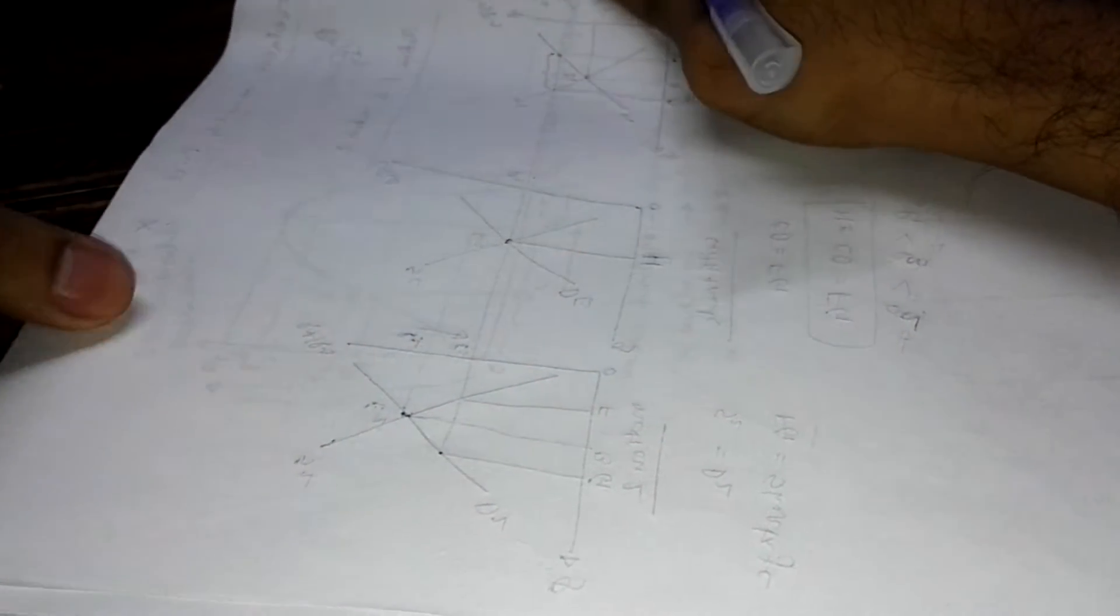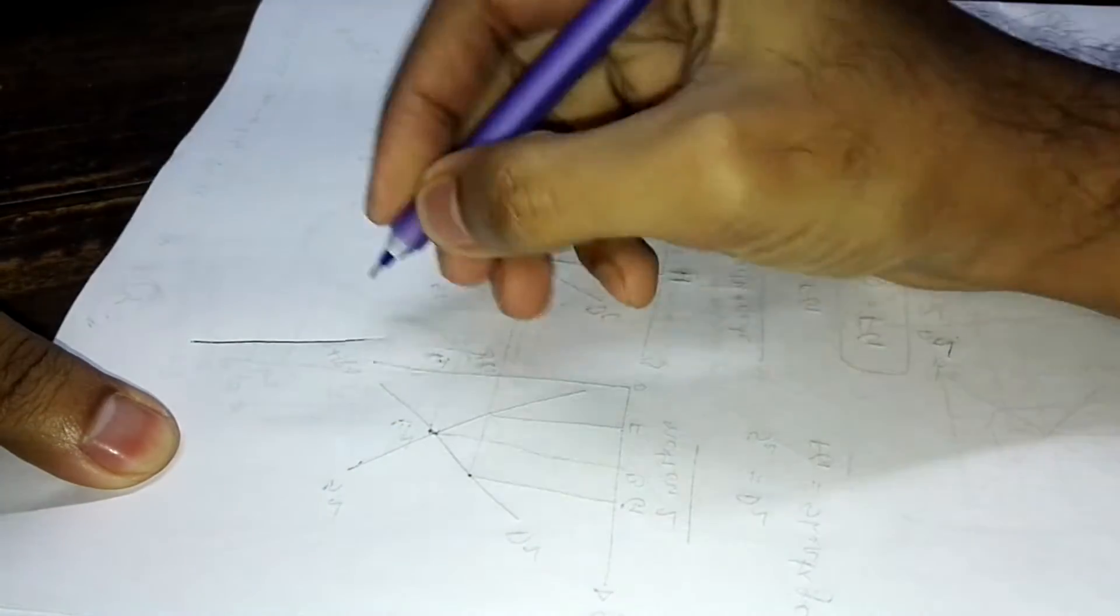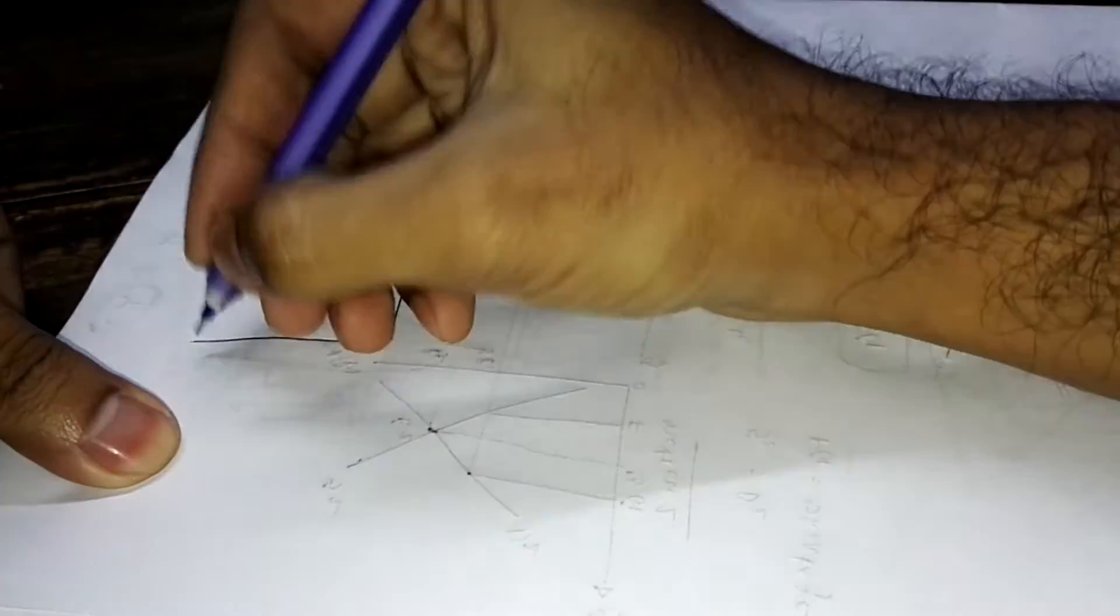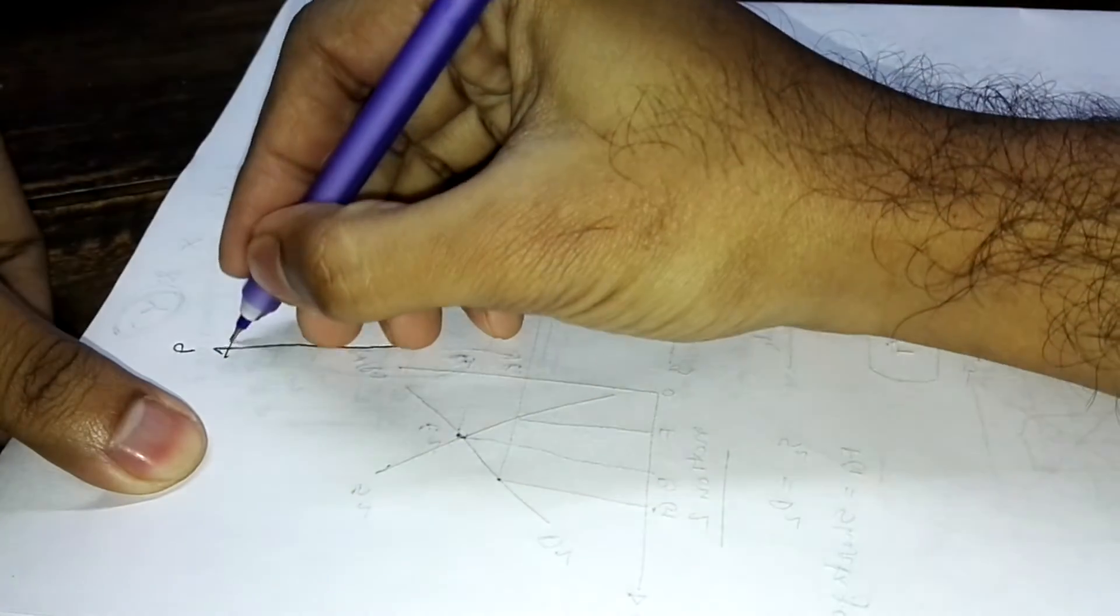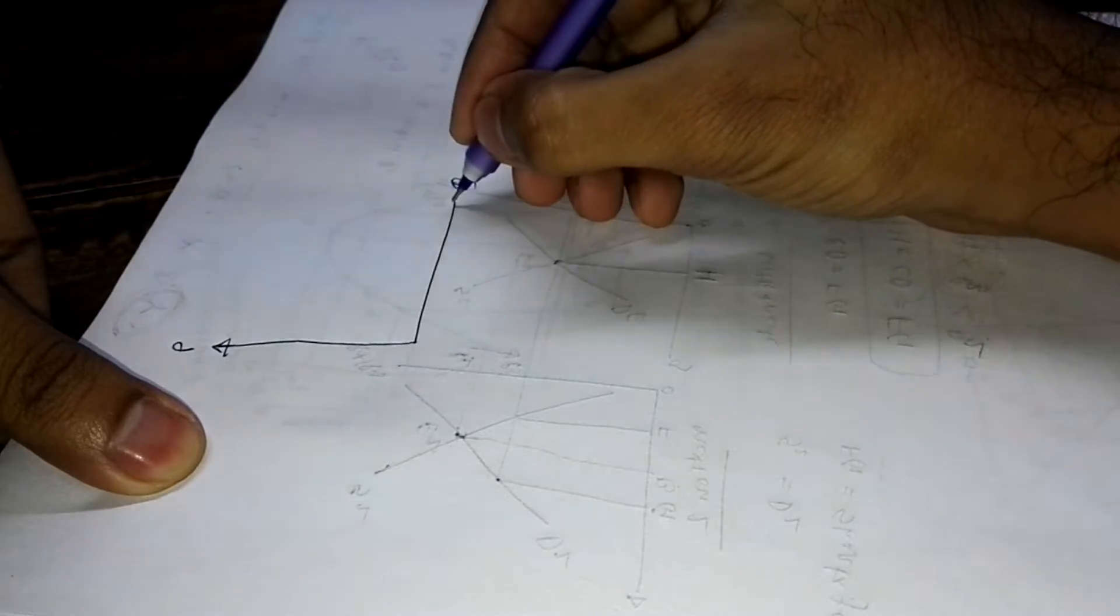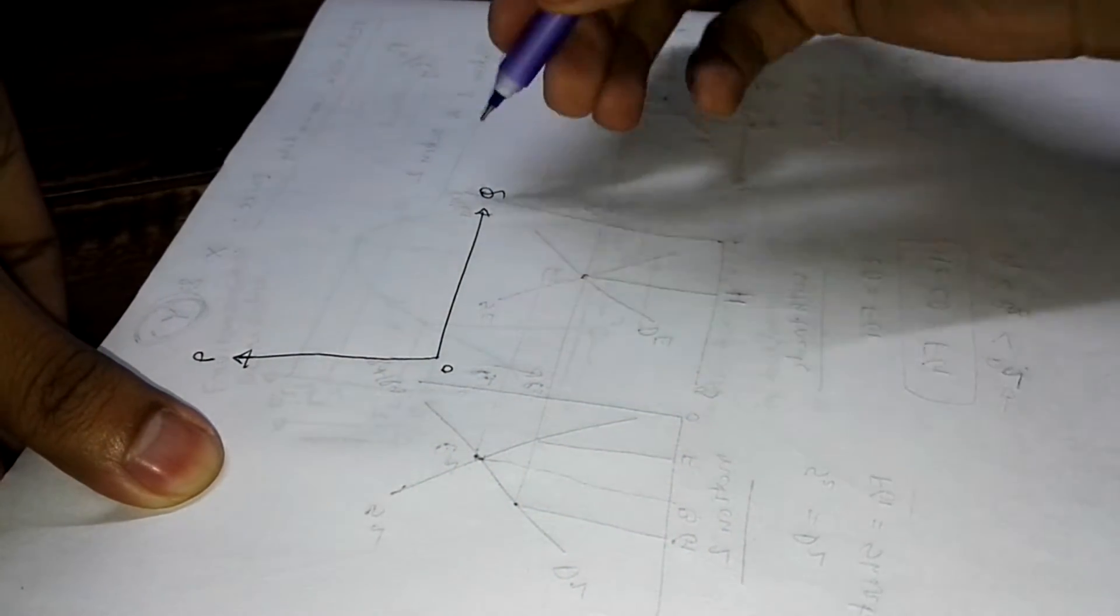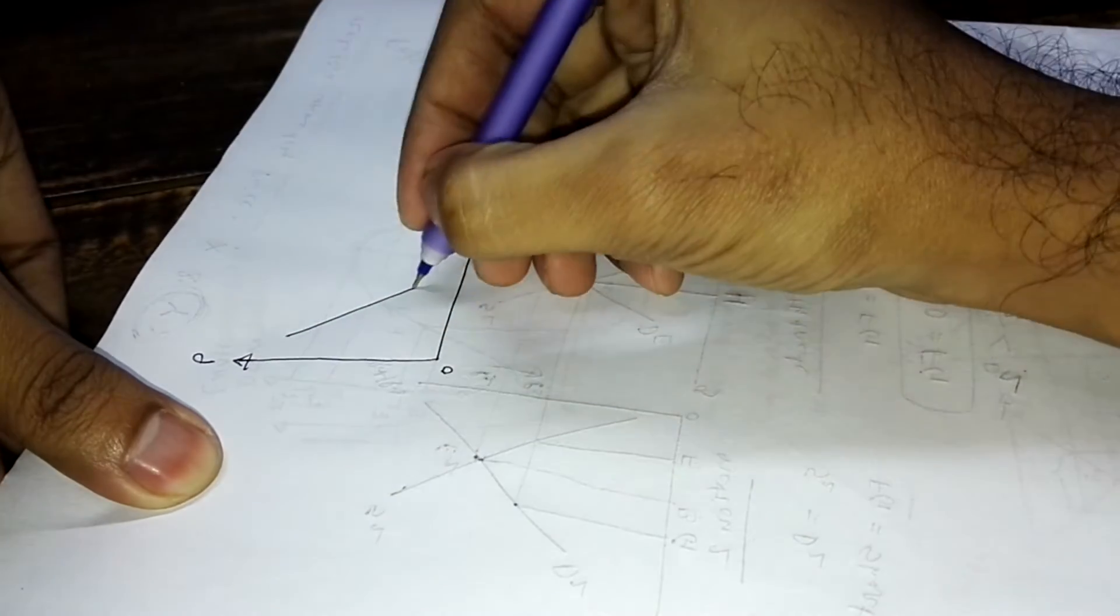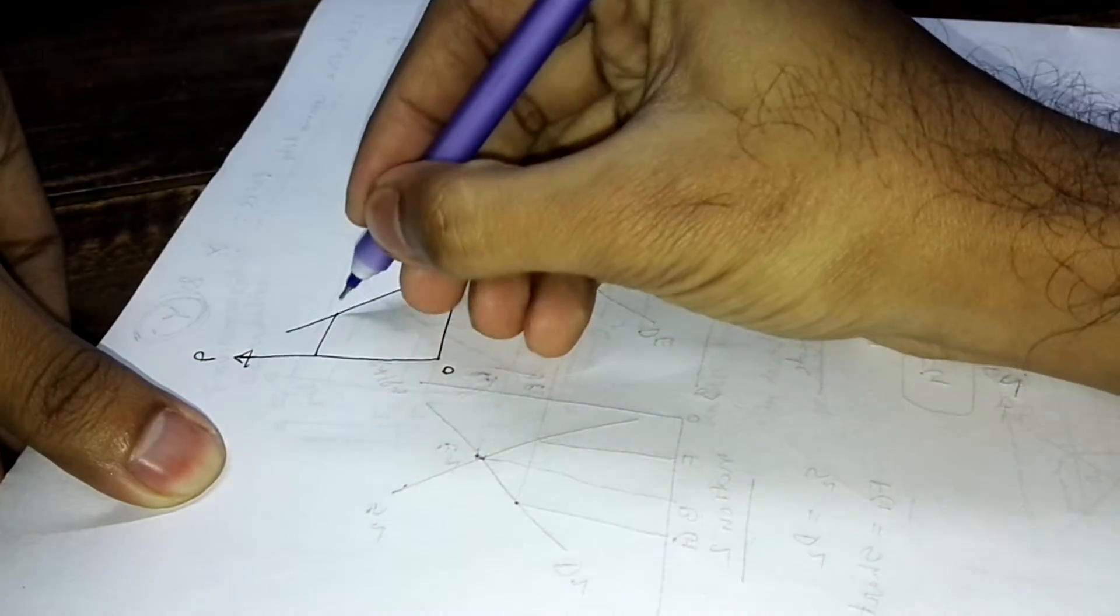So to find out the slope of a demand curve, let's draw a demand curve. Here is P and horizontal like this is Q quantity, so this is a demand curve D.